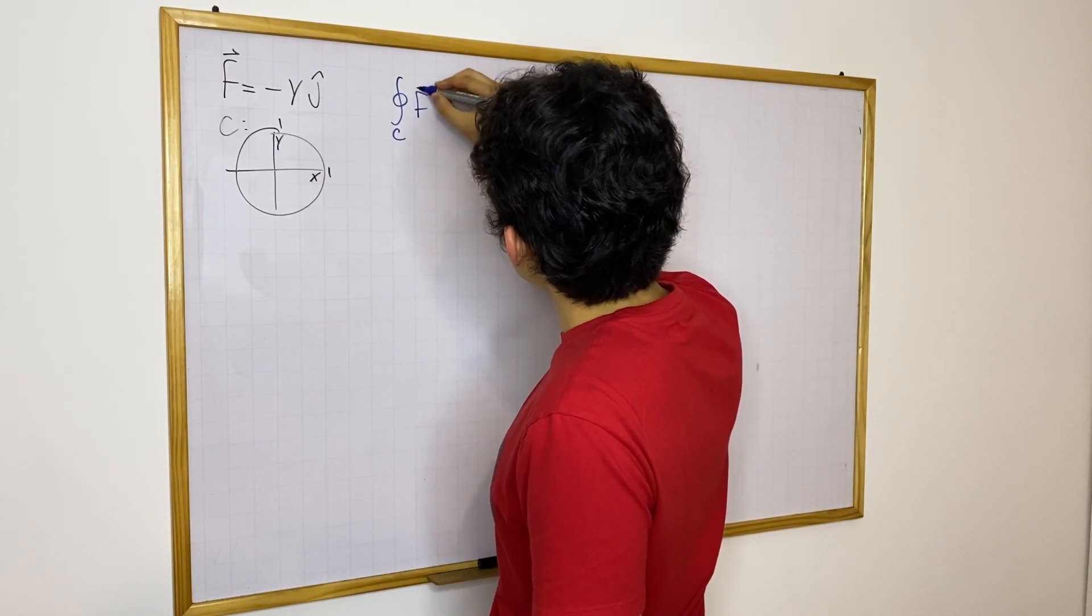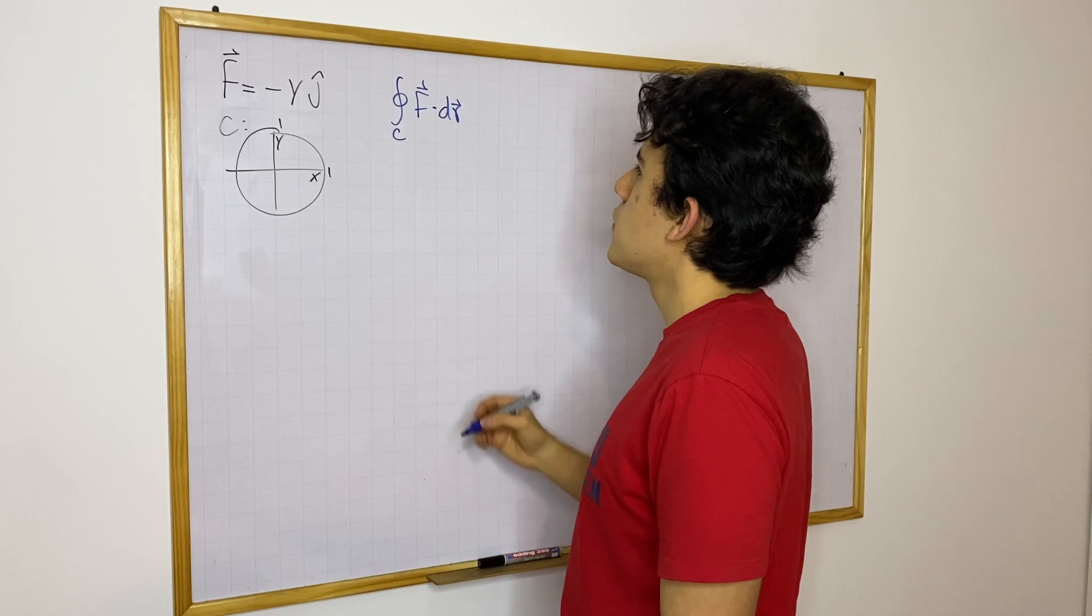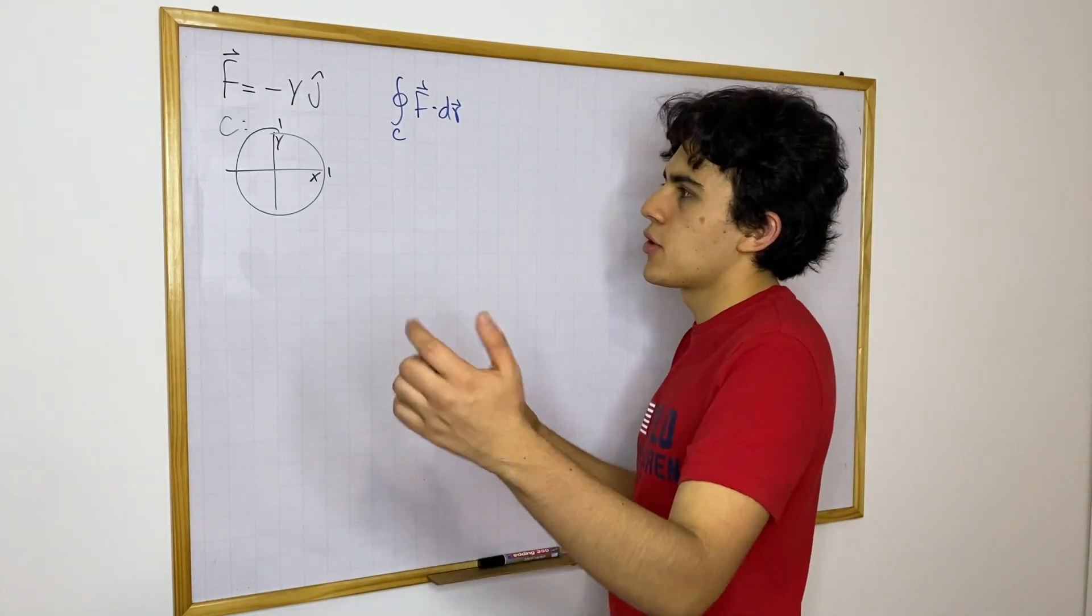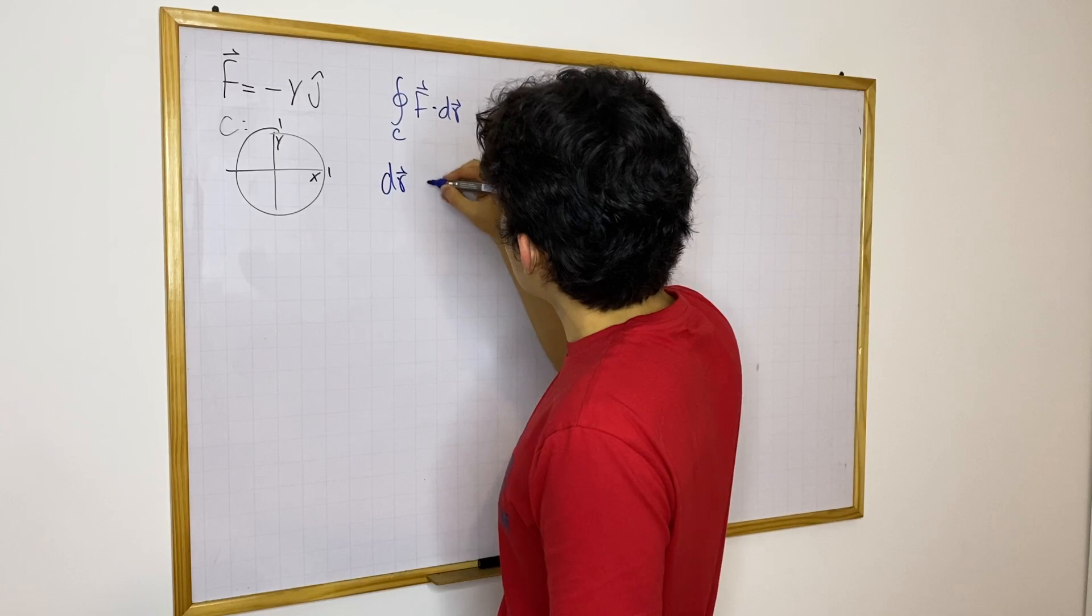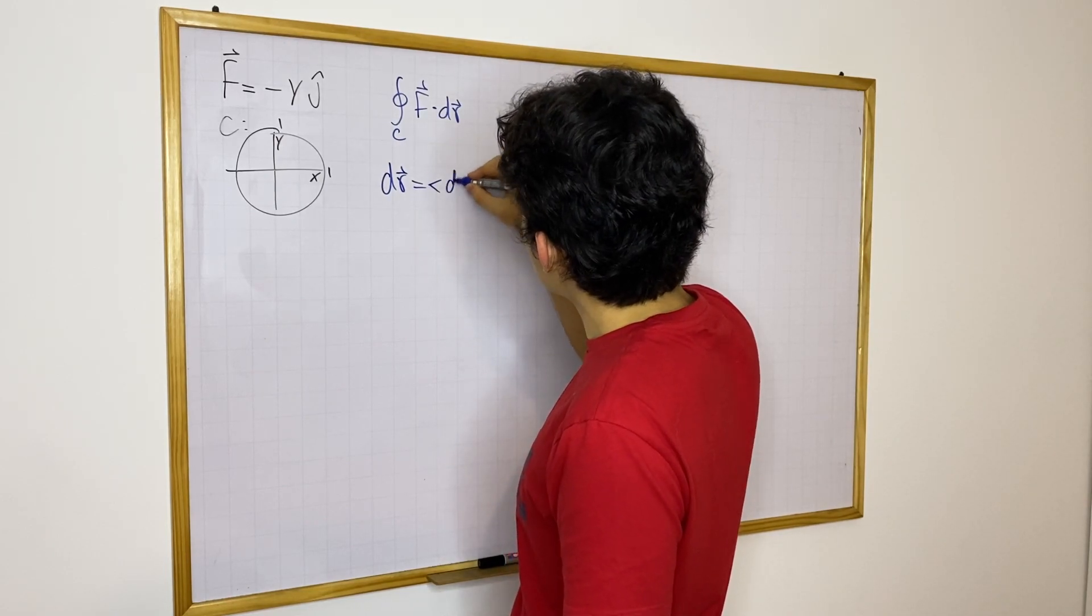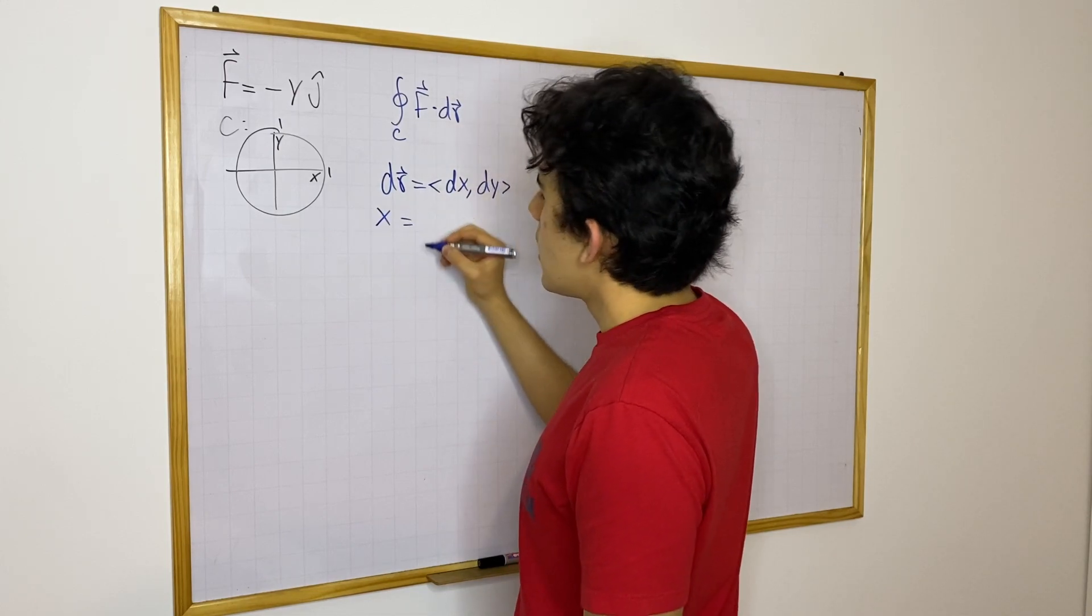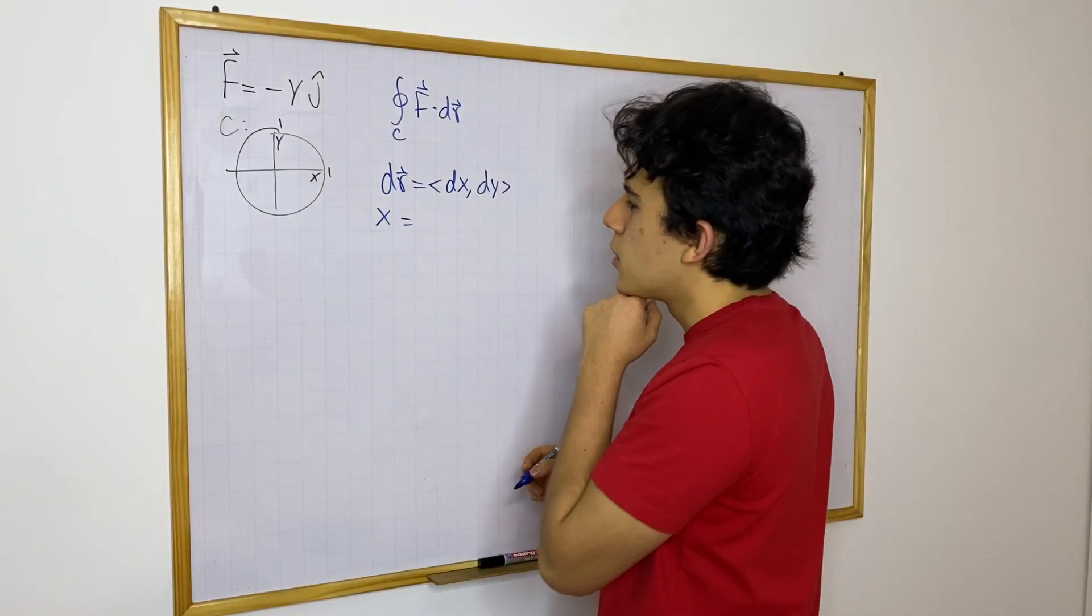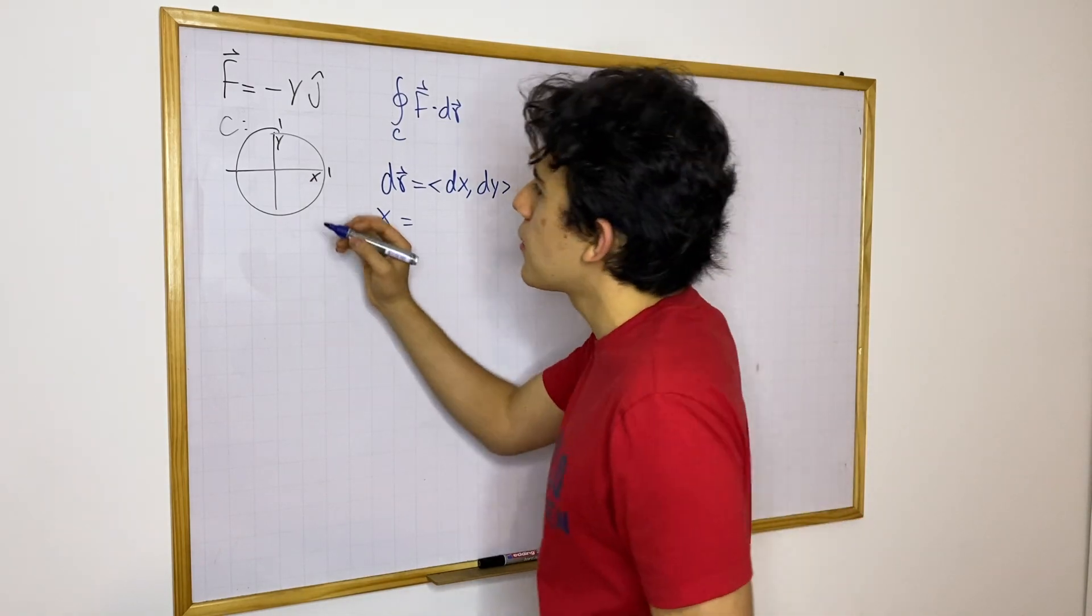We have f dot dr and now I will solve this by just rewriting everything, just parameterizing the curve. So we know that dr can be written like dx dy. Okay, now we know that x, well this is a circle so it would be very simple to parameterize it with respect to an angle theta.